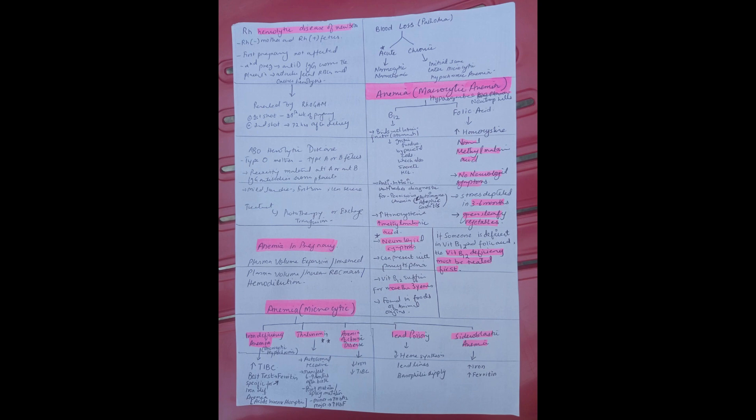This is important for you to remember. The next thing is iron deficiency anemia. In iron deficiency anemia, it is important that it is the only type of anemia in which the total iron binding capacity is increased.